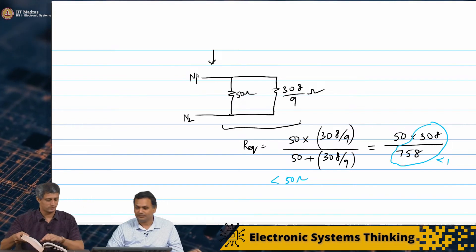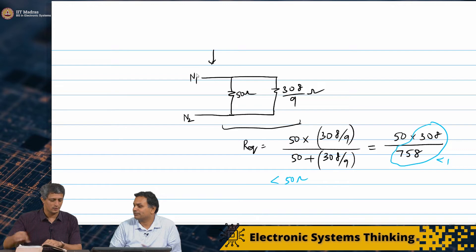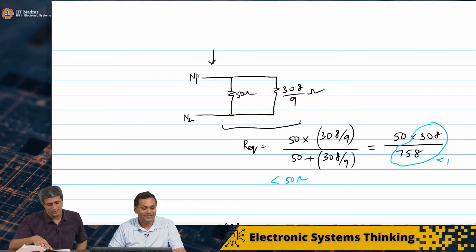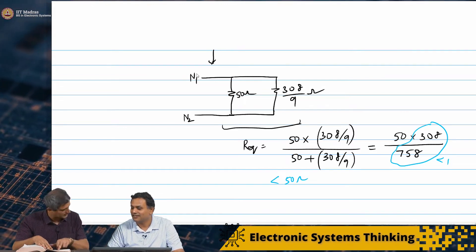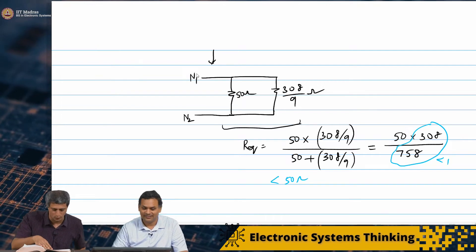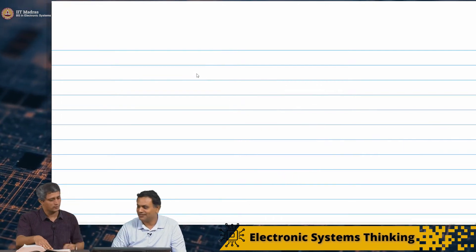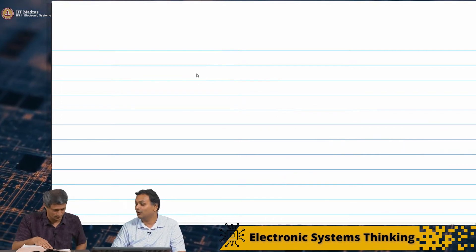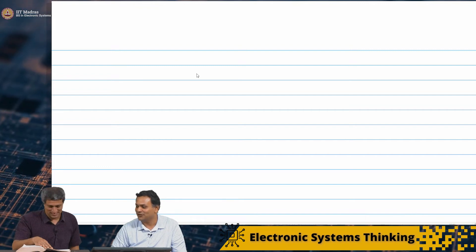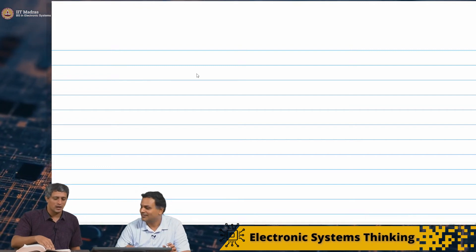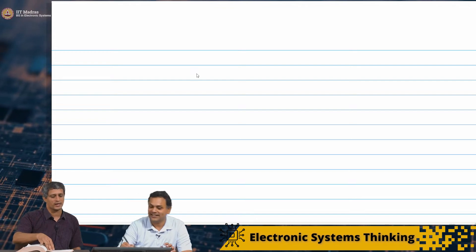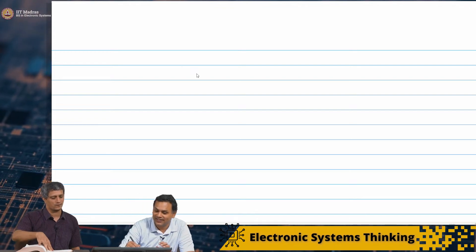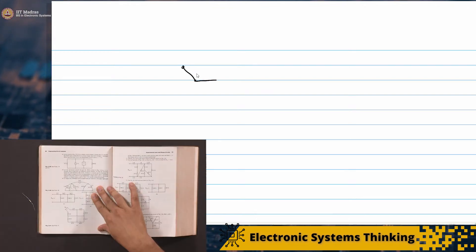Now I am going to take it one more notch up. This problem — we might have to draw it exactly as shown because we want to show some wires going over each other. We have never seen that before. Can you redraw this network by looking at it?